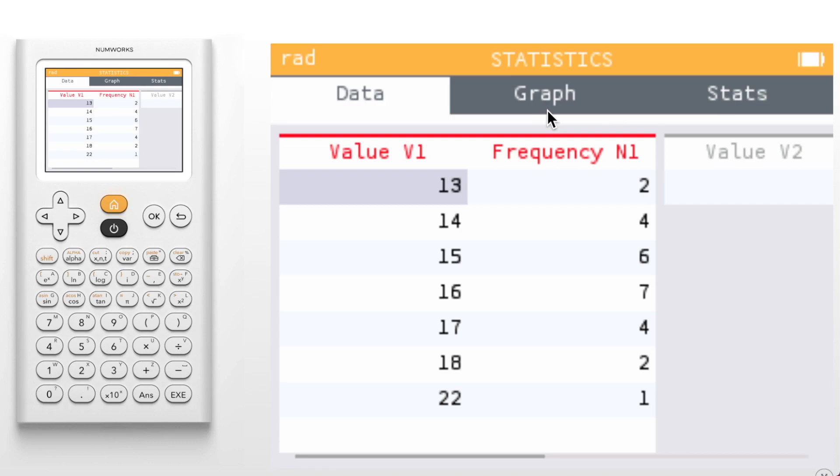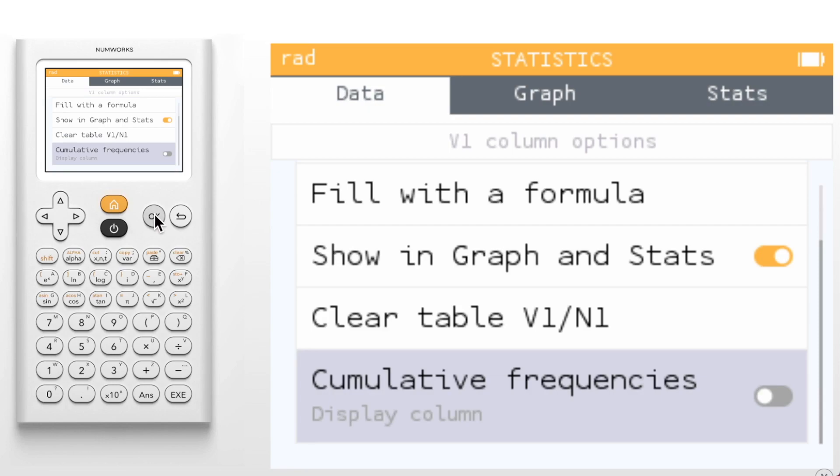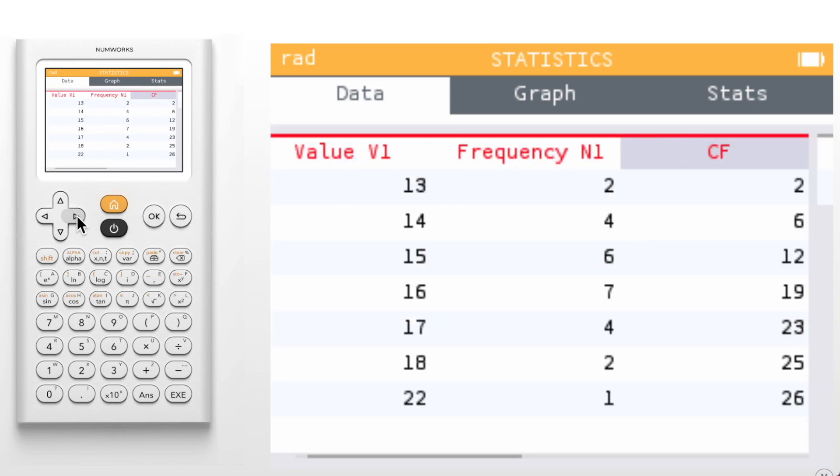Within the data tab we enter our data just as before. You'll notice that I've already entered some values into my first data table. We can open the column options by navigating up to v1 and clicking ok. Notice there is now a cumulative frequencies option. If we toggle this on a third column will appear for this table showing those cumulative frequencies.